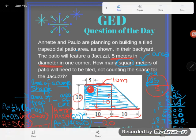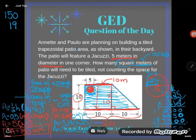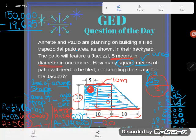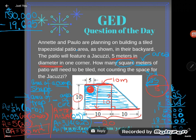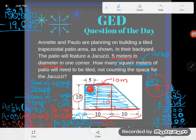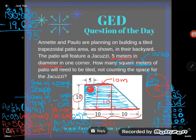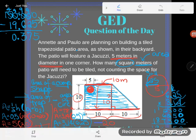Now, we said we'd find the area of the trapezoid, then find the area of the circle, and subtract them. Area of the trapezoid was 150 square meters. Subtracting 19.625 — making sure place values line up and borrowing as needed — I get 130.375 square meters.